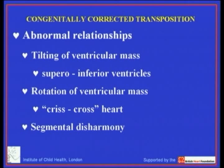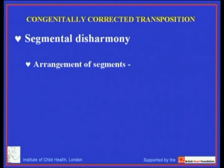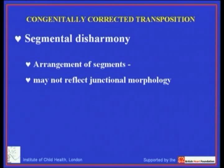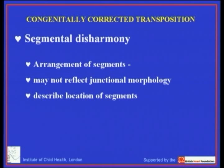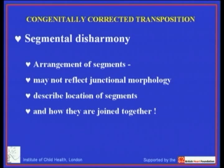Exceptionally rarely there can be segmental disharmony: the atrial chambers join the ventricular chambers in discordant fashion, yet despite those discordant atrioventricular connections the segments remain in harmony. Typically, usual atrial arrangement goes with left-hand topology and mirror imagery goes with right-hand topology — both disharmonious. But in these very rare cases, usual atrial arrangement can occur with right-hand ventricular topology and still have discordant atrioventricular connections. The only way to manage such rare malformations is first to describe the location of the segments and then describe how they are joined together.